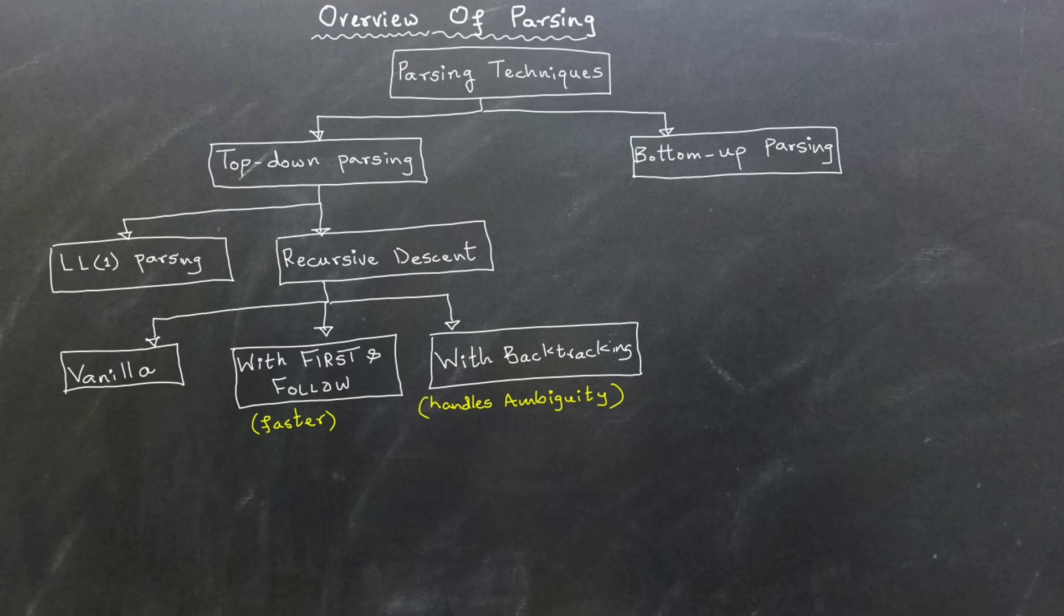One limitation of top-down parsing is its inability to handle left recursive grammars. Since many context-free grammars are inherently left recursive, bottom-up parsing is often preferred for practical use.